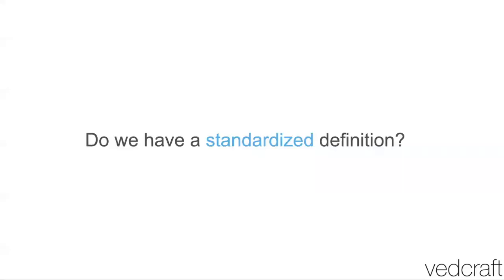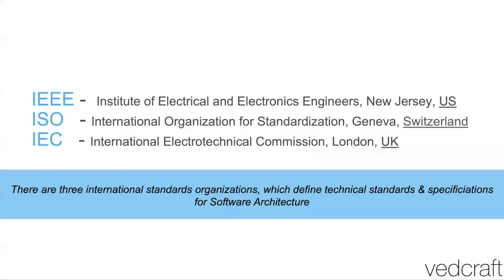A key question people ask is: do we have a standard definition? Has anybody defined it? The short answer is yes — there is industry standardization. Three organizations worth calling out are IEEE, ISO, and IEC. These are standards across different geographies and they all have different definitions of software architecture. But the intent is the same: how you can lay out the foundational building blocks for the product or system under consideration.